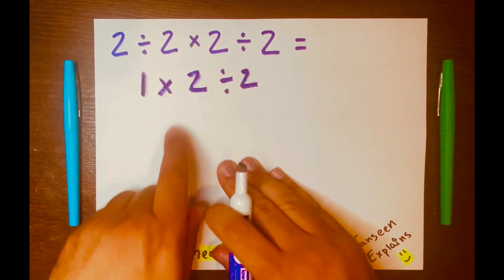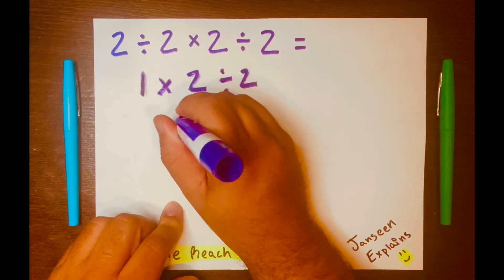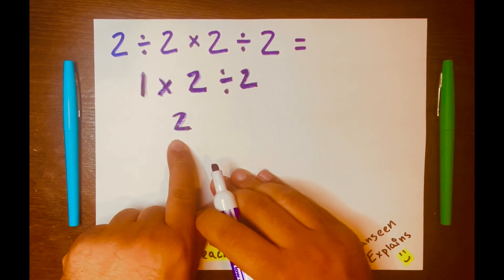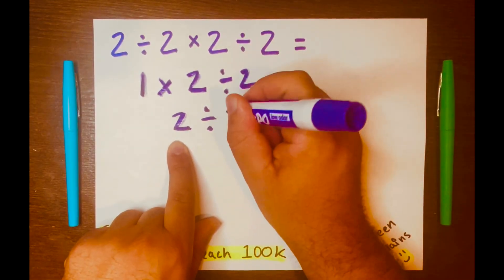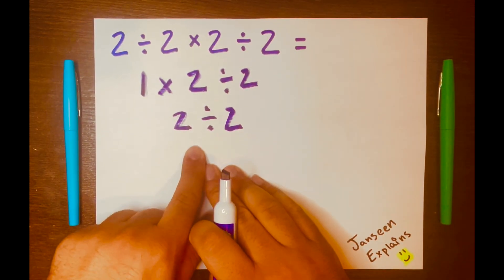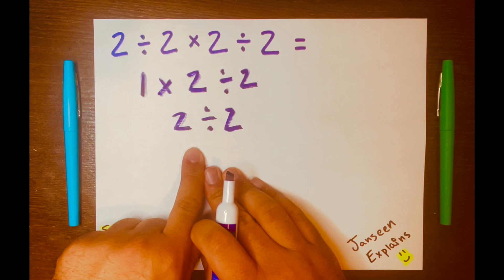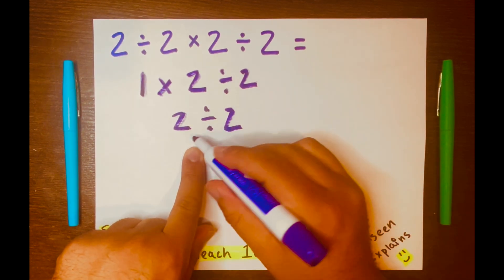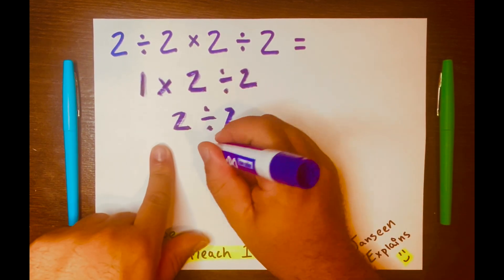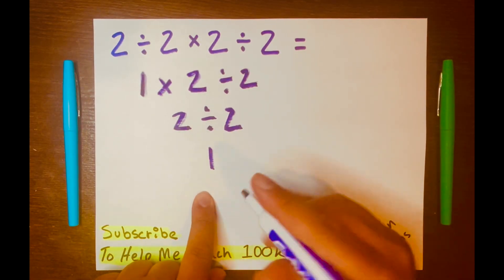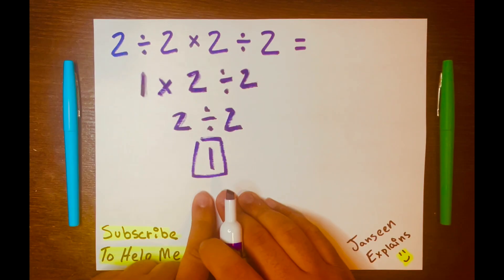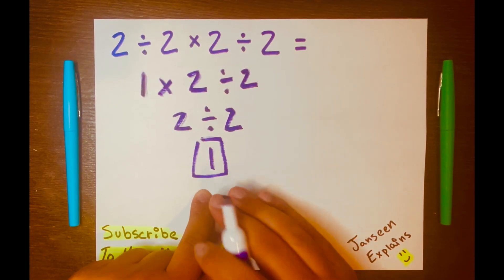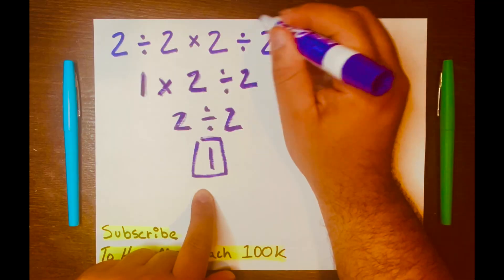1 times 2 will go first, right? So I'll write 2. And then bring down the division symbol down and the 2 down. Now we have 2 divided by 2 equals 1. And so the answer is 1. But there's a mistake. We missed something. And guess what we missed?